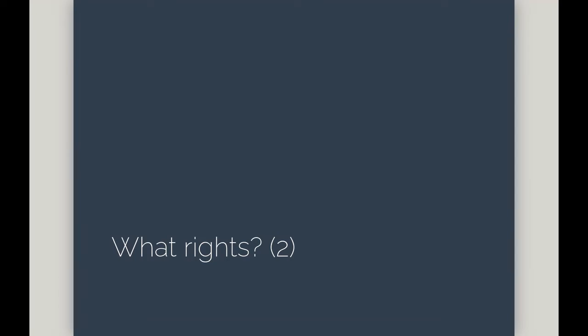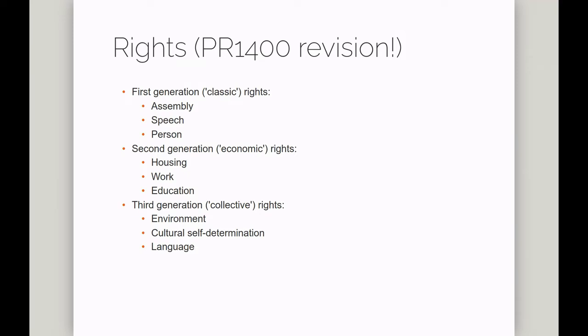In the first part of this five-part lecture I looked at whether rights should be included in a constitution. The second question a constitutional drafter has to answer is: if you're going to include rights, what rights should be included? It might be helpful to think back to this topic as addressed in PR 1400, Introduction to Politics and Government.